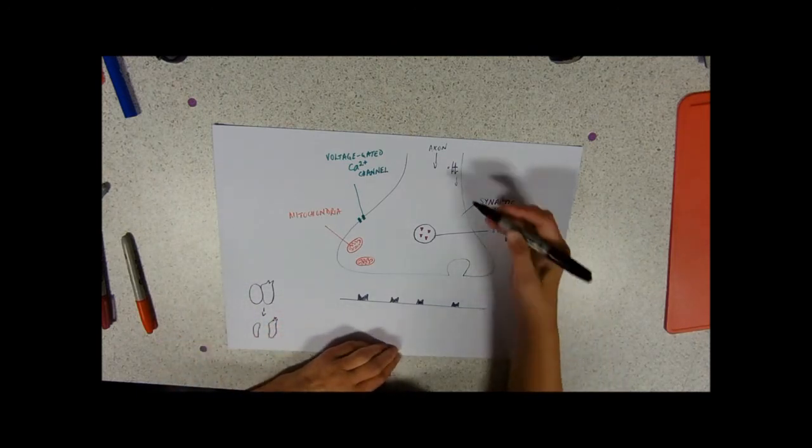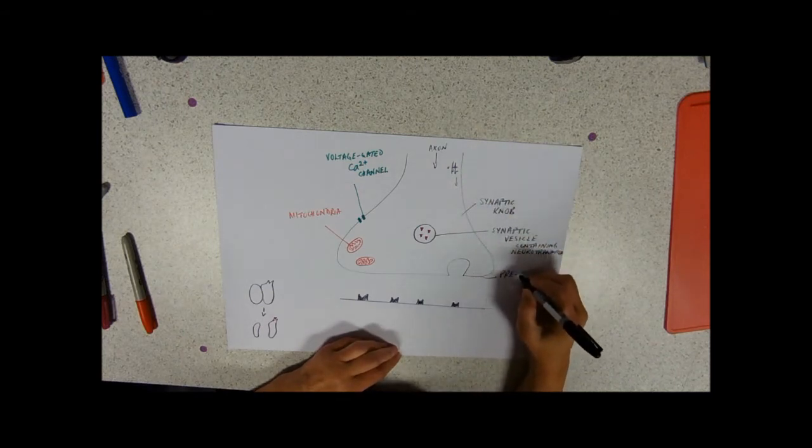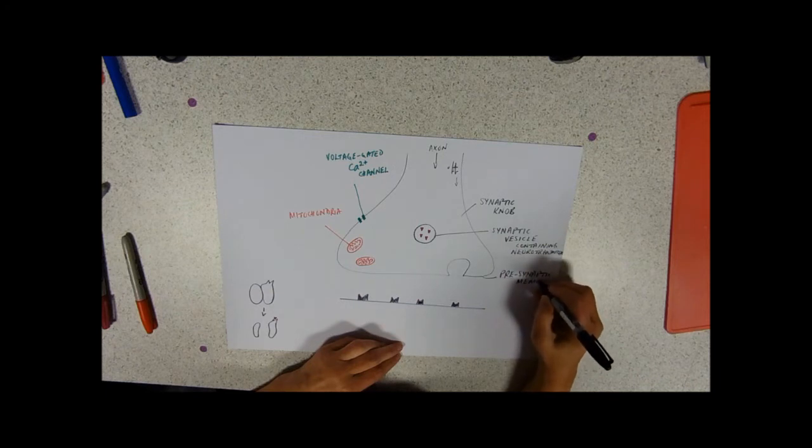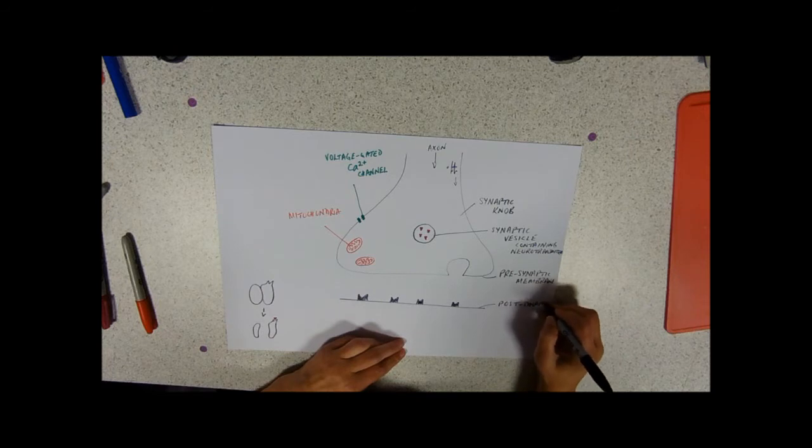So, on this side, our impulse is coming down this way. This side is therefore called a pre-synaptic membrane. And the other side is a post-synaptic membrane, after the synapse.